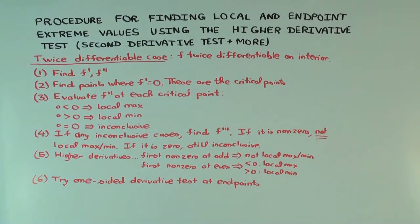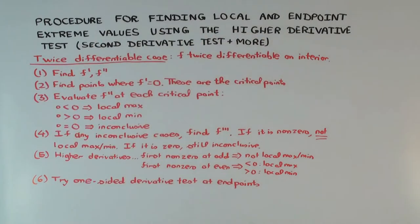This talk is about how you find local and endpoint extreme values using essentially the second derivative test. There are some situations where it's inconclusive, and there are a few more things you can do to settle those cases — that's called the higher derivative test. So the procedure is the second derivative test, and in cases where it's inconclusive, we do a little more work, which is the higher derivative test.